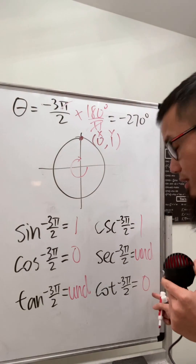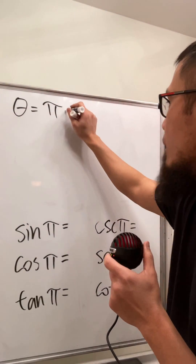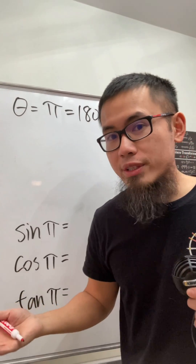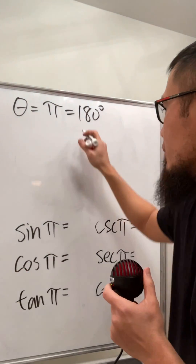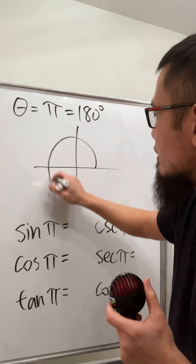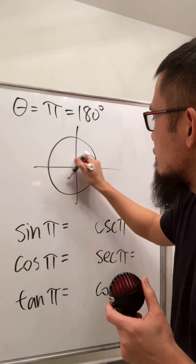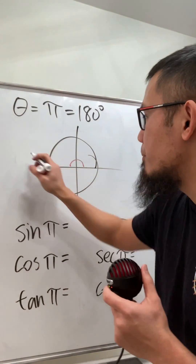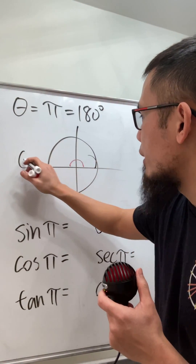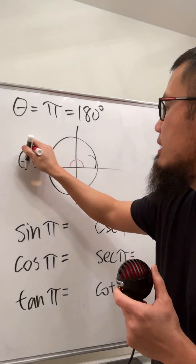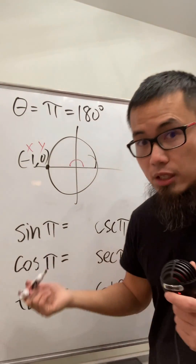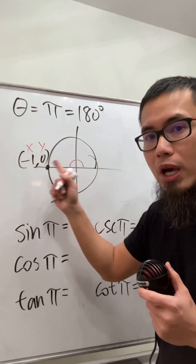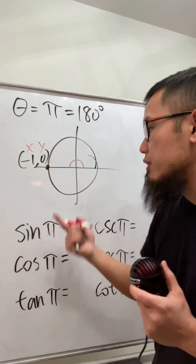The next angle is π, which equals 180° — another quadrantal angle. We call out the unit circle: 180° takes us from the starting point to the left side. The coordinate there is (-1, 0), where -1 is x and 0 is y.